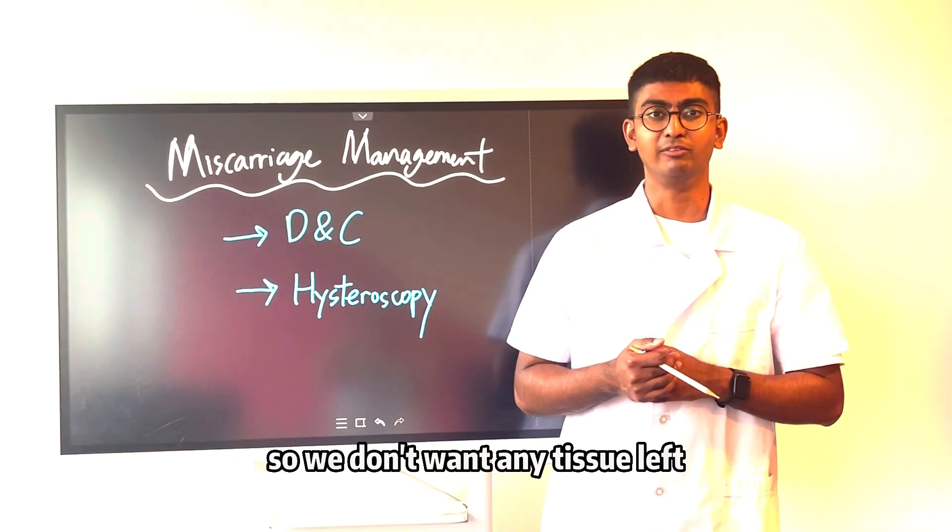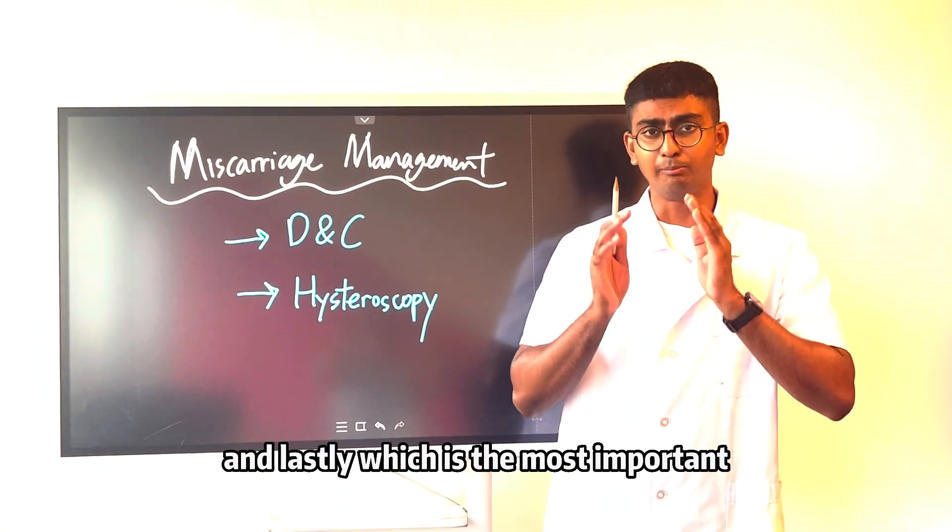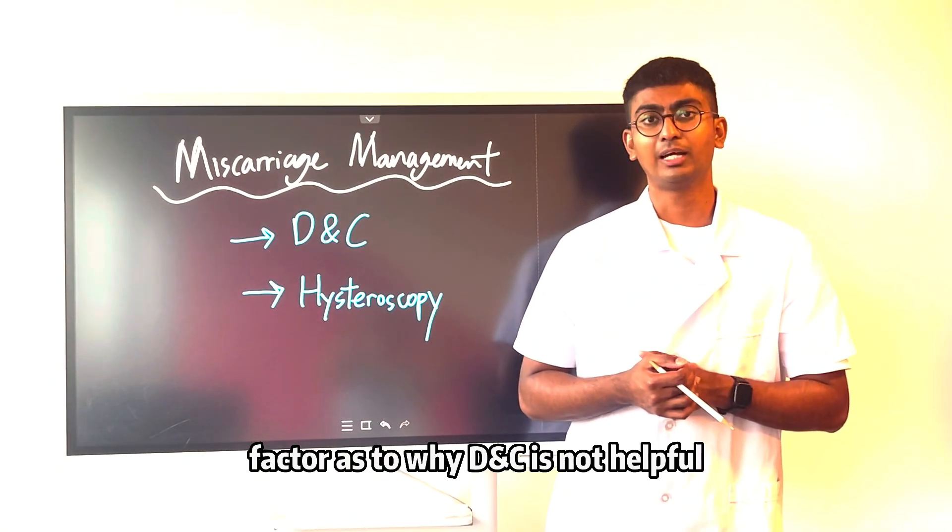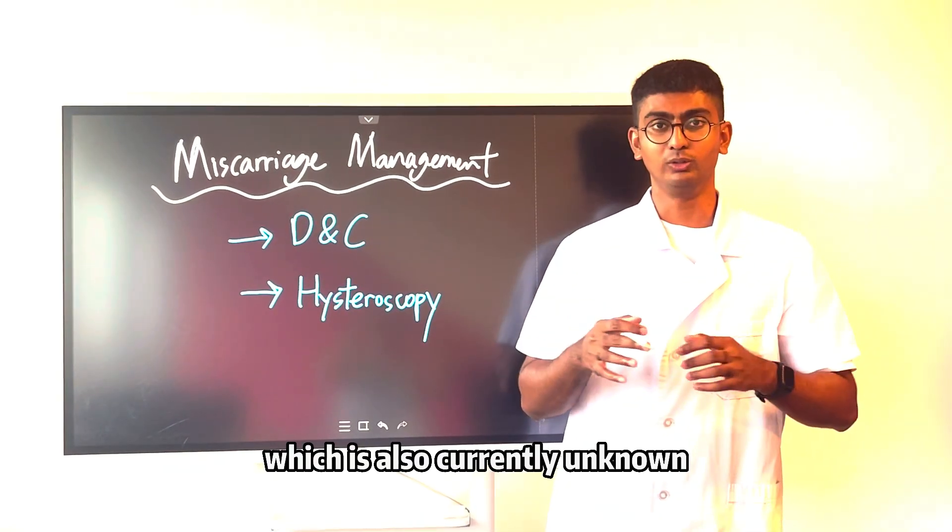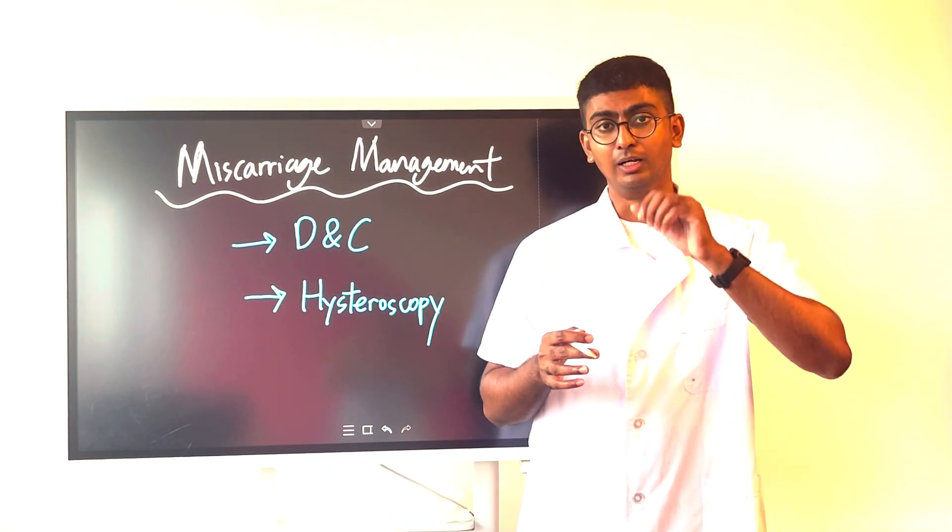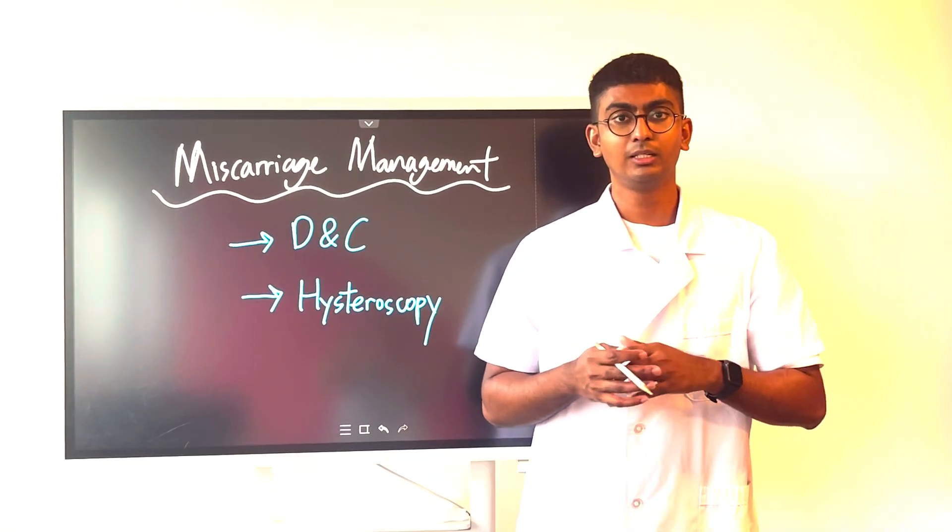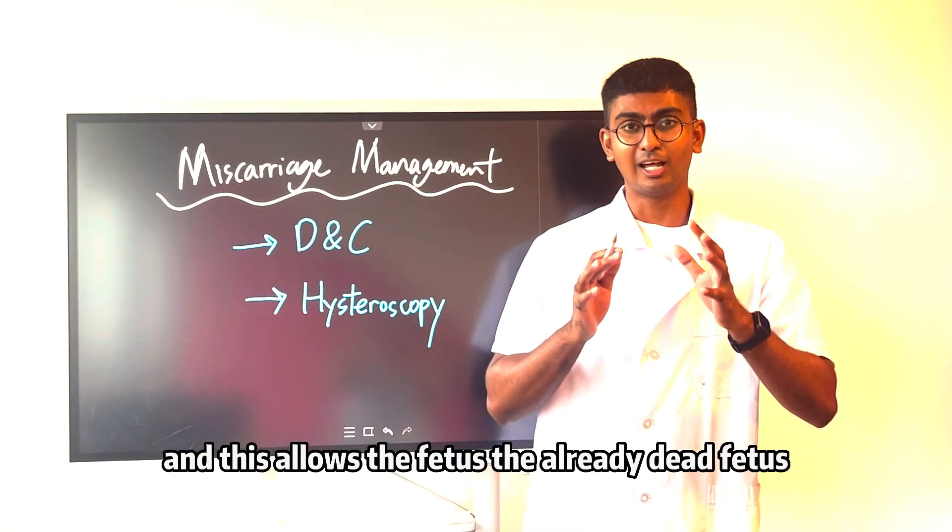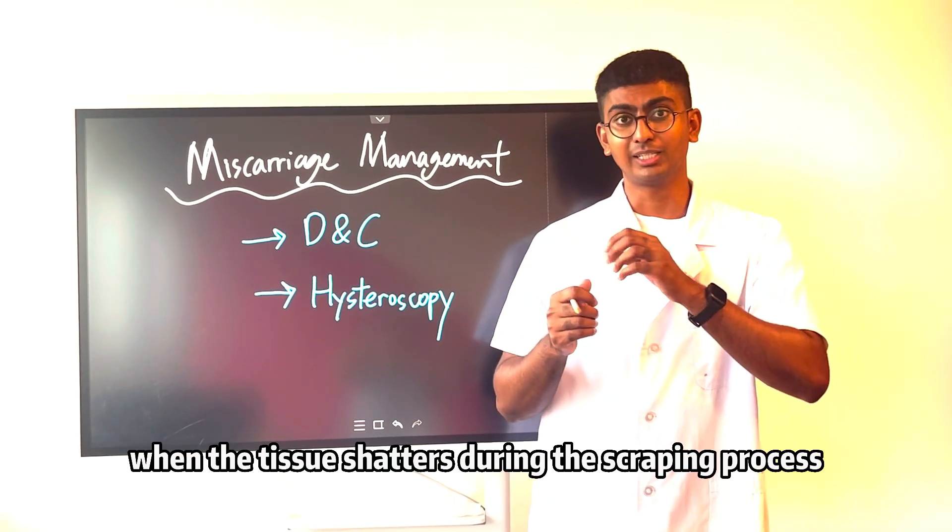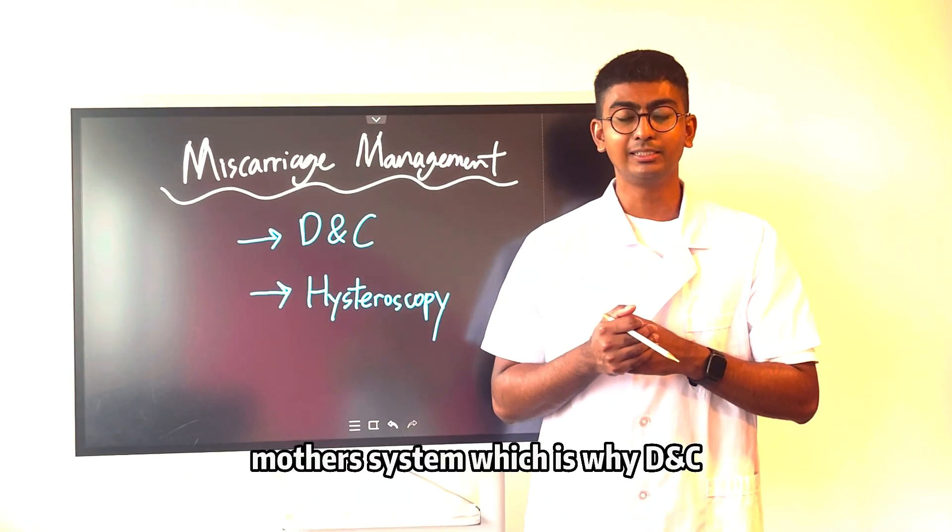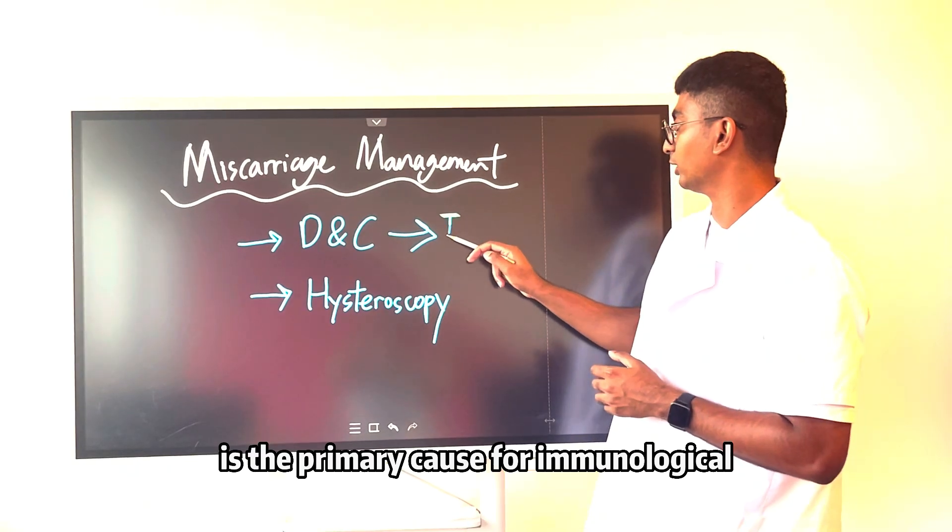We don't want any tissue left behind because it can cause unwanted conditions and infections. Lastly, which is the most important factor as to why D&C is not helpful or healthy for the mother, which is also currently unknown, is when this endometrium is being scraped, these blood vessels of the uterus deep under the endometrium will be exposed. This allows the fetus, the already dead fetus, when the tissue shatters during the scraping process, to easily enter into the mother's system, which is why D&C is the primary cause for immunological RSA.